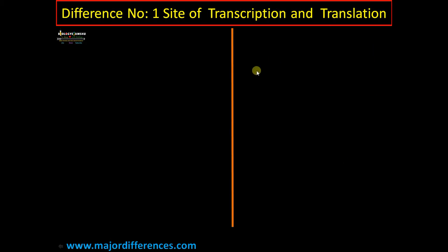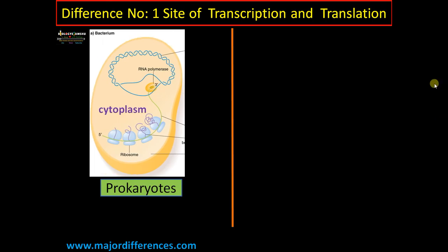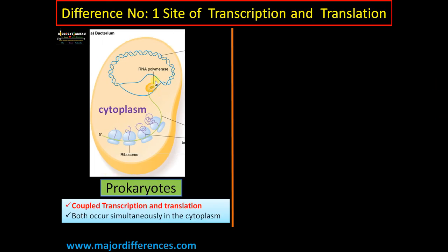Difference number one: the site of transcription and translation. In prokaryotes, transcription is happening and along with transcription, translation has already begun. So transcription and translation are coupled in prokaryotes — both can occur simultaneously, and the location is the cytoplasm.